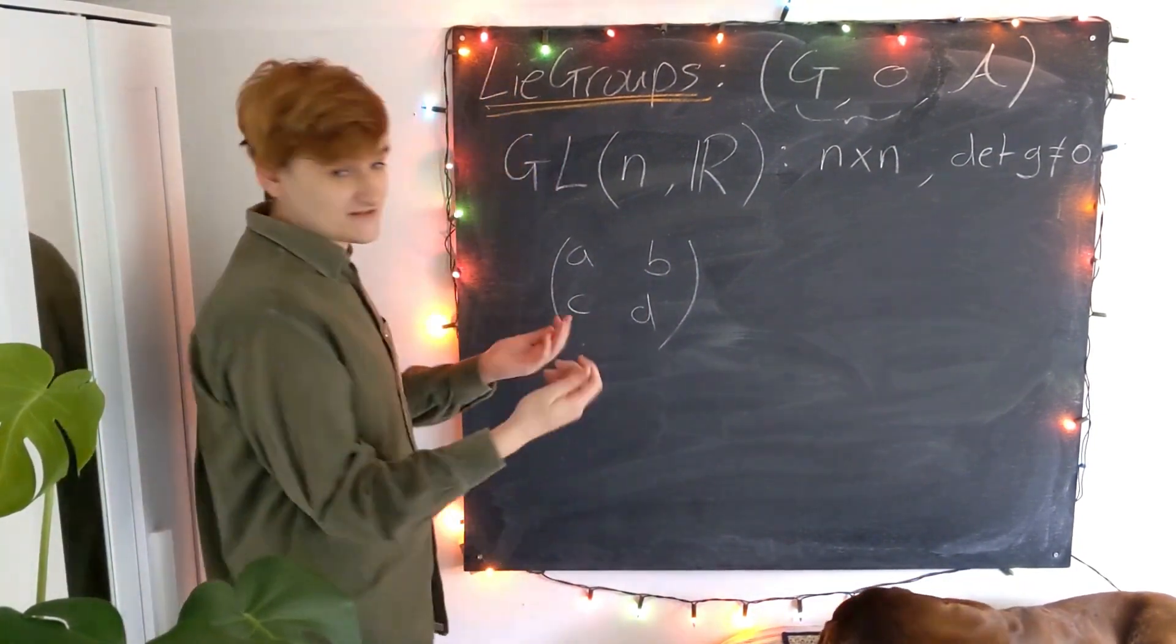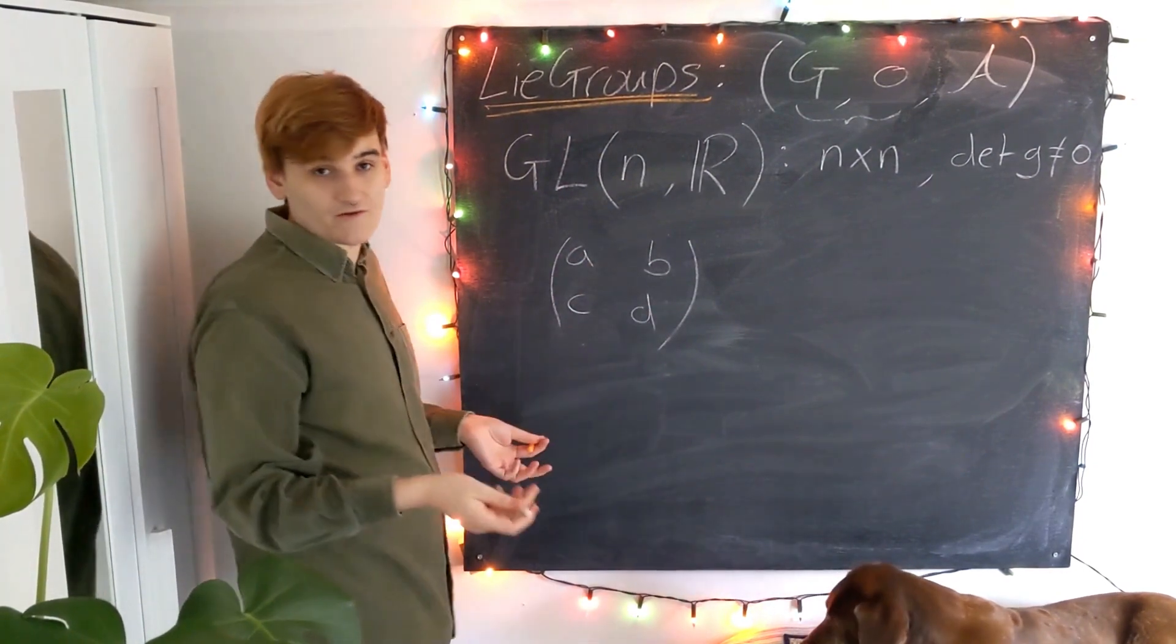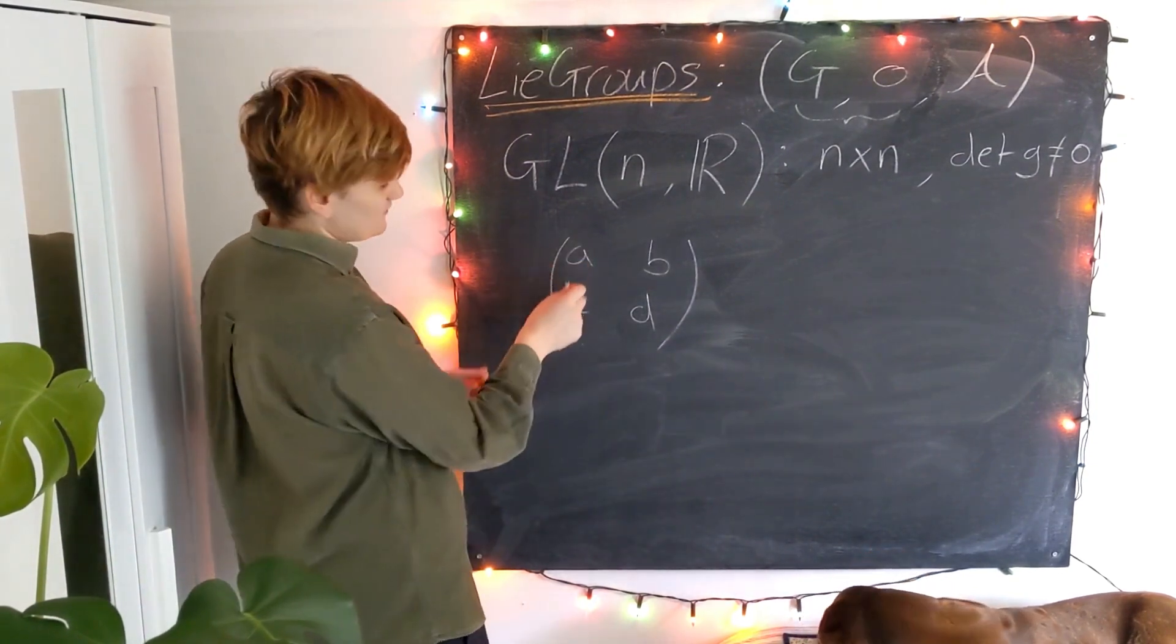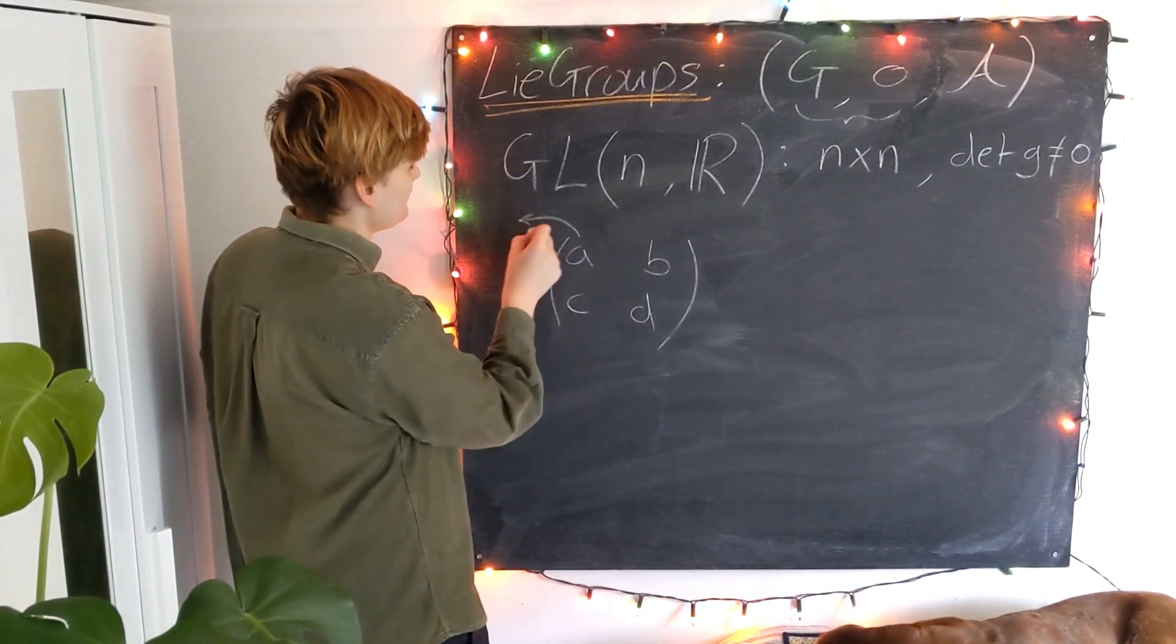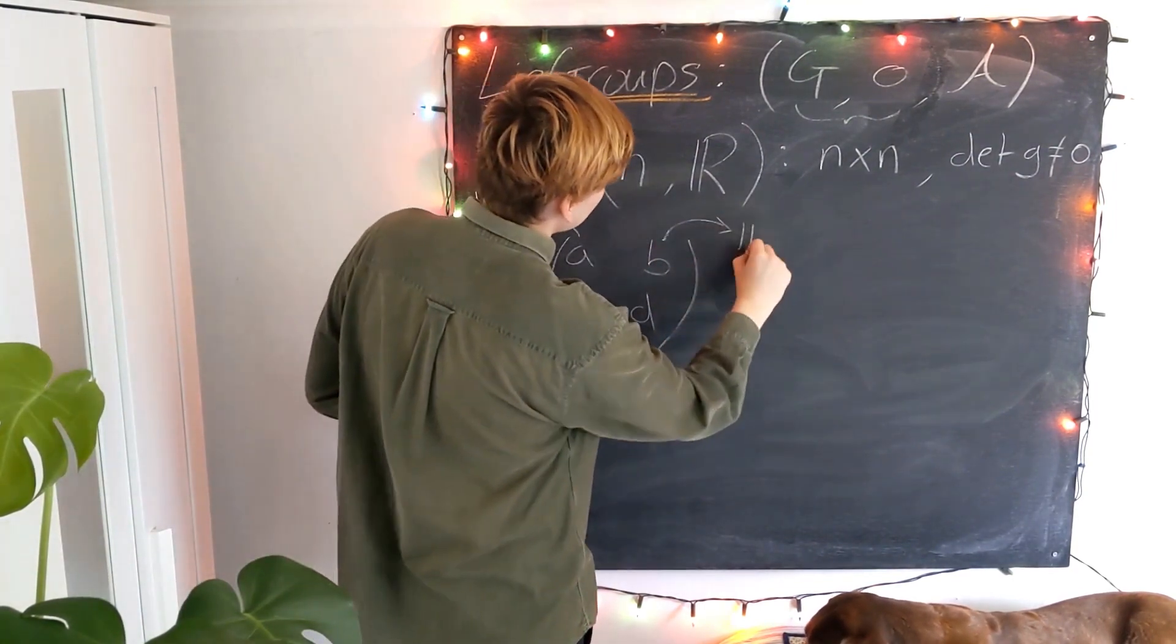And now what we do is we essentially just say, OK, each of these matrix elements represents one of our real coordinates. So if you like, you can think of each of these matrix elements as being their own individual map into some copy of the real numbers, and so on.